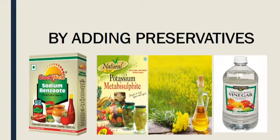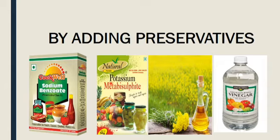Next is preservation by adding preservatives. Chemical preservatives like potassium metabisulphite can be used for food items. If we don't have chemicals, we can use natural preservatives like vinegar and mustard oil to preserve food items.